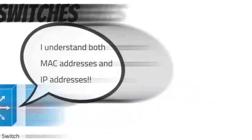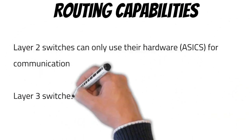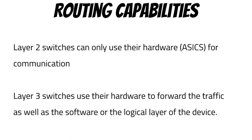Another key difference is routing capabilities. Layer 2 switches don't have routing capabilities — they only have switching capabilities. That's all they understand: MAC addresses and how to move data, which are frames at that layer. Switching capability means they can only forward data that has the burned-in physical MAC address on the NIC of whatever node is trying to communicate on the network.